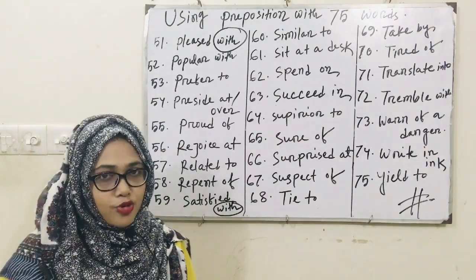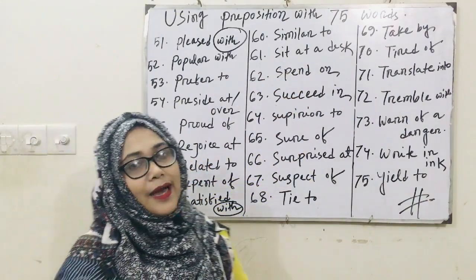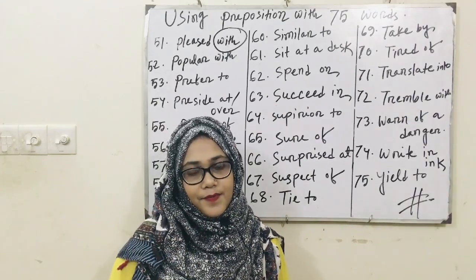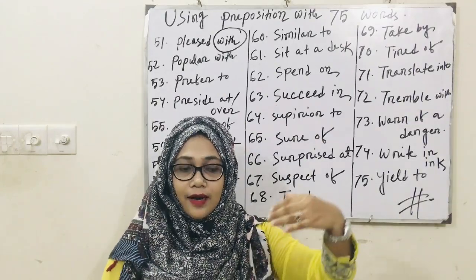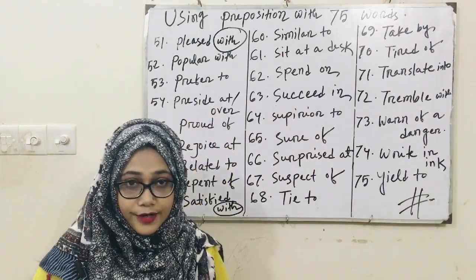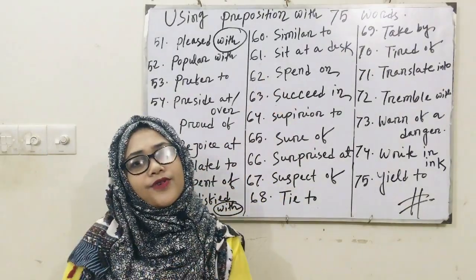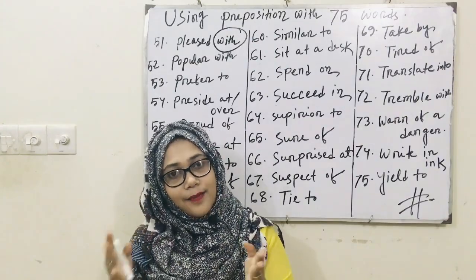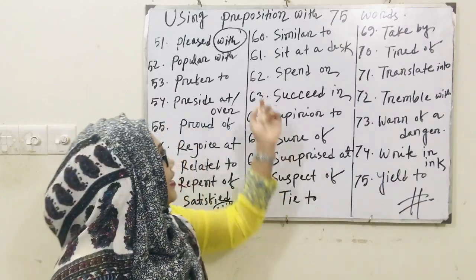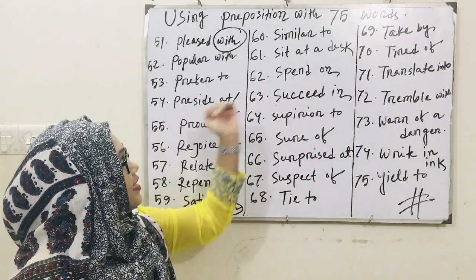The preferable preposition stays the same. Word number 60 — the preposition used with it is similar, and after 'similar,' the preposition 'to' is used. Word number 61.